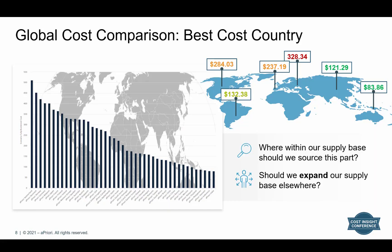This is one quick example of an output from a matrix costing event for an individual component. It allows the user to see specifically within their supply base what makes the most sense for a sourcing location, and also gives insight into whether there are certain areas around the world where they may want to expand their supply base. In this case, they have current factories in North America, South America, and China — but the results indicate there may actually be a better price in Southeast Asia, presenting an opportunity to expand the supply base.